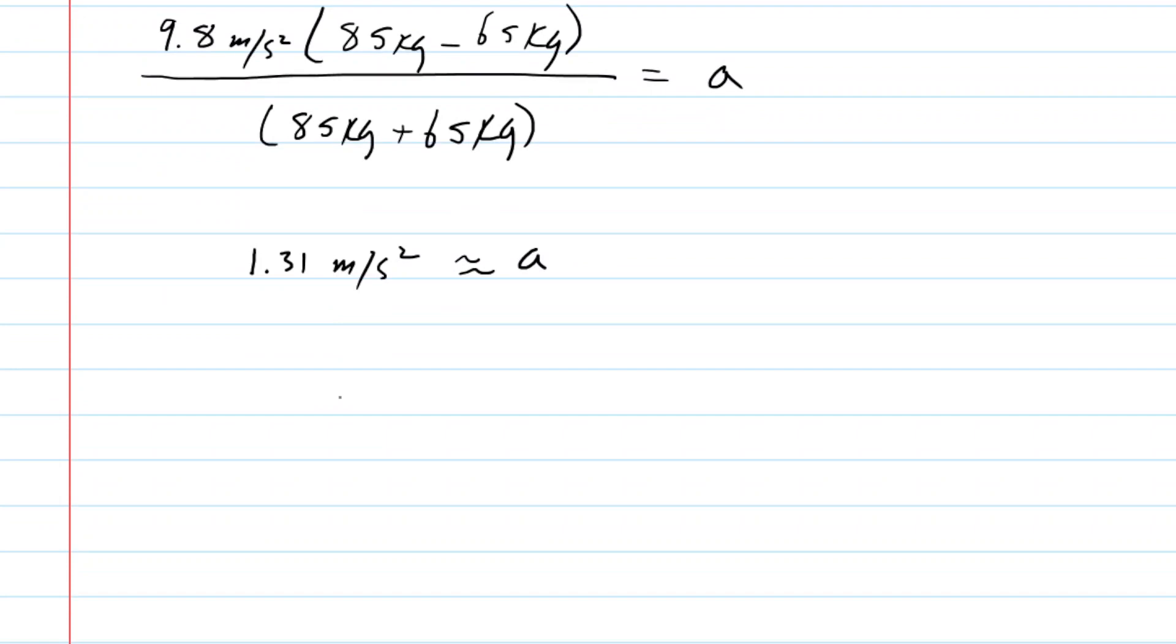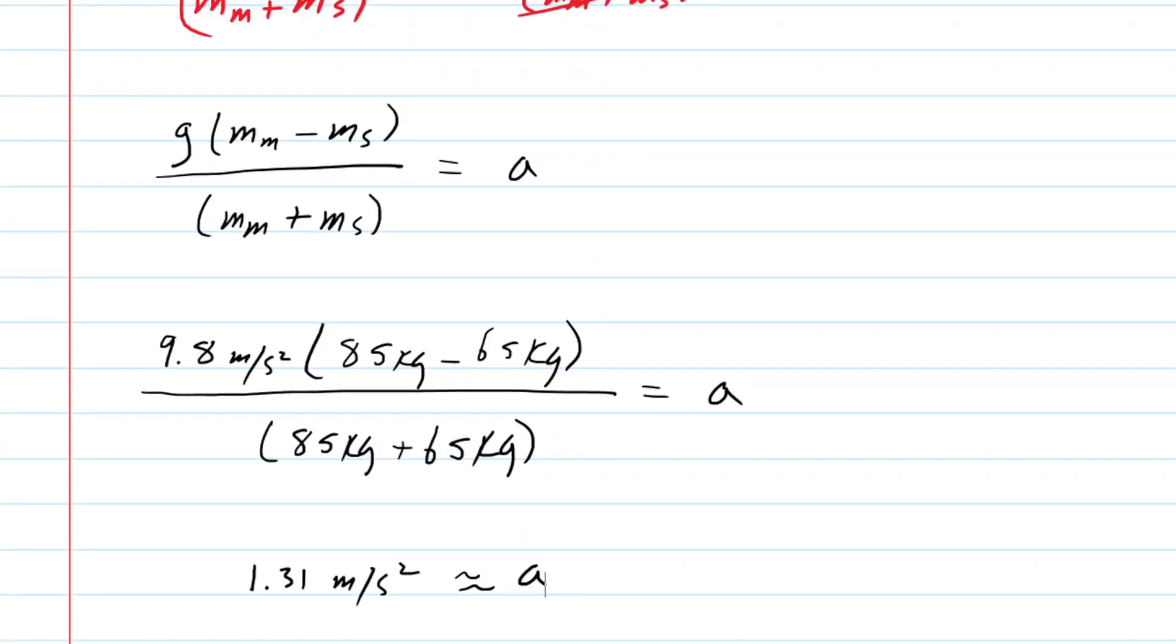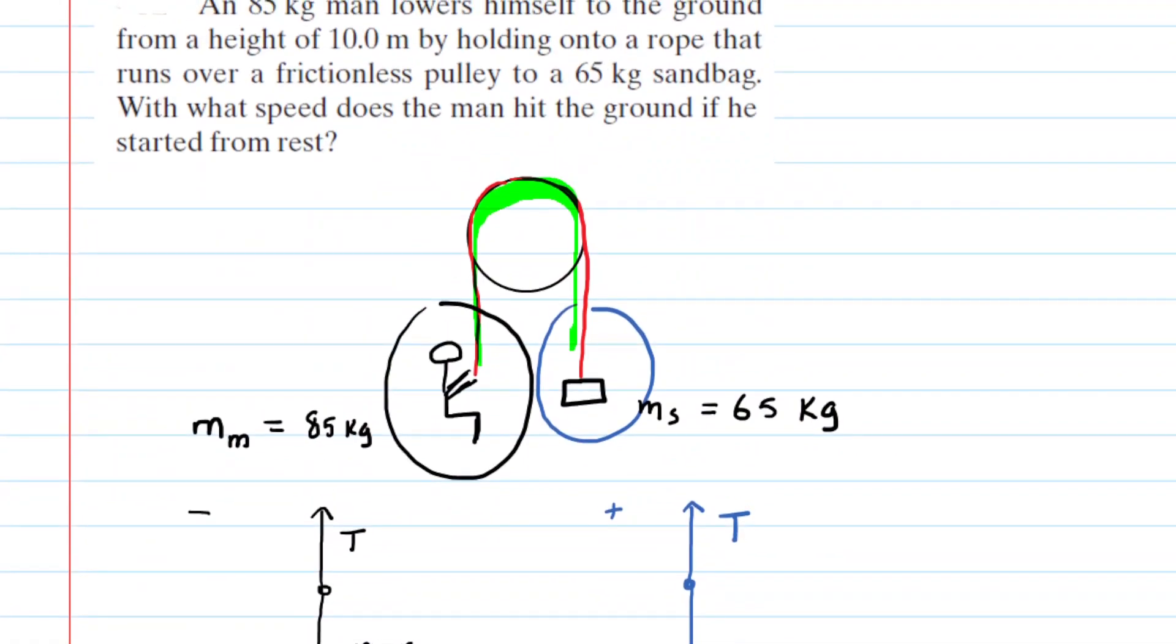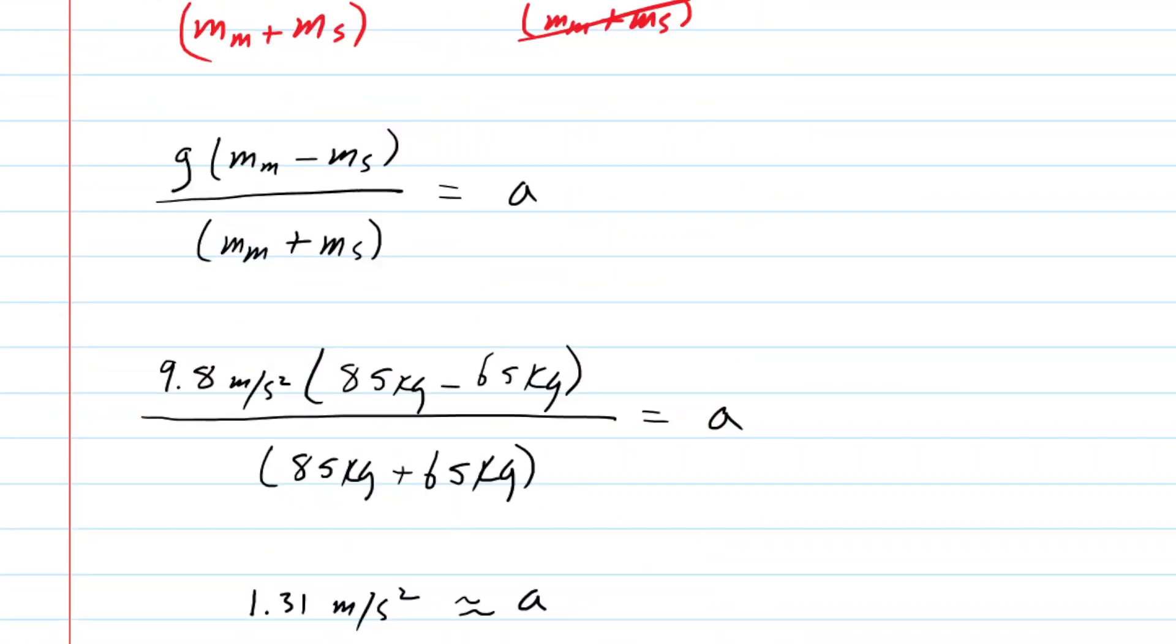And what we're now going to do is go back and revisit what we were actually trying to solve. We were trying to figure out with what speed does the man hit the ground? Well, he started at a height of 10 meters. And he also started from rest. So let's take that information into account.